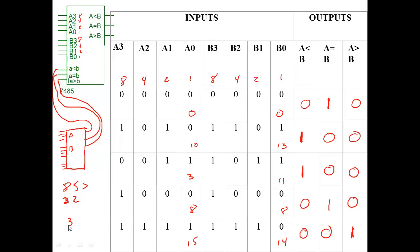If we had 35 and 31, the tens digits — three and three — are equal, so we have to compare the lower digits. When the upper four bits are equal, the chip puts a high on A equals B, which tells the second chip to compare the lower four bits as well, and then it produces the accurate output. This cascading approach works for as many bits as you need to compare.